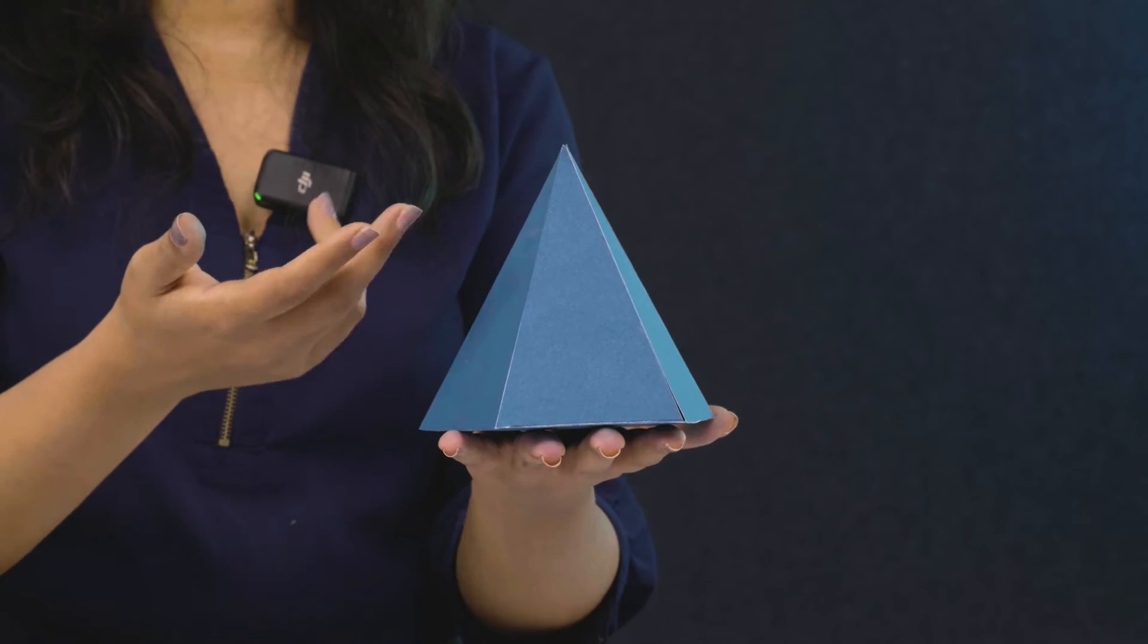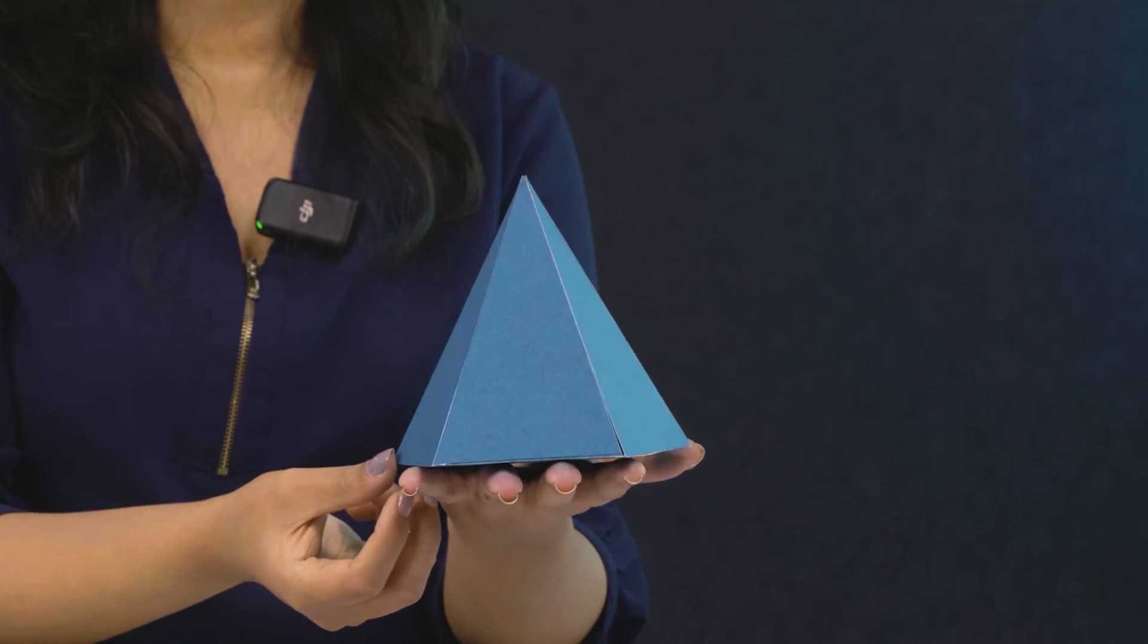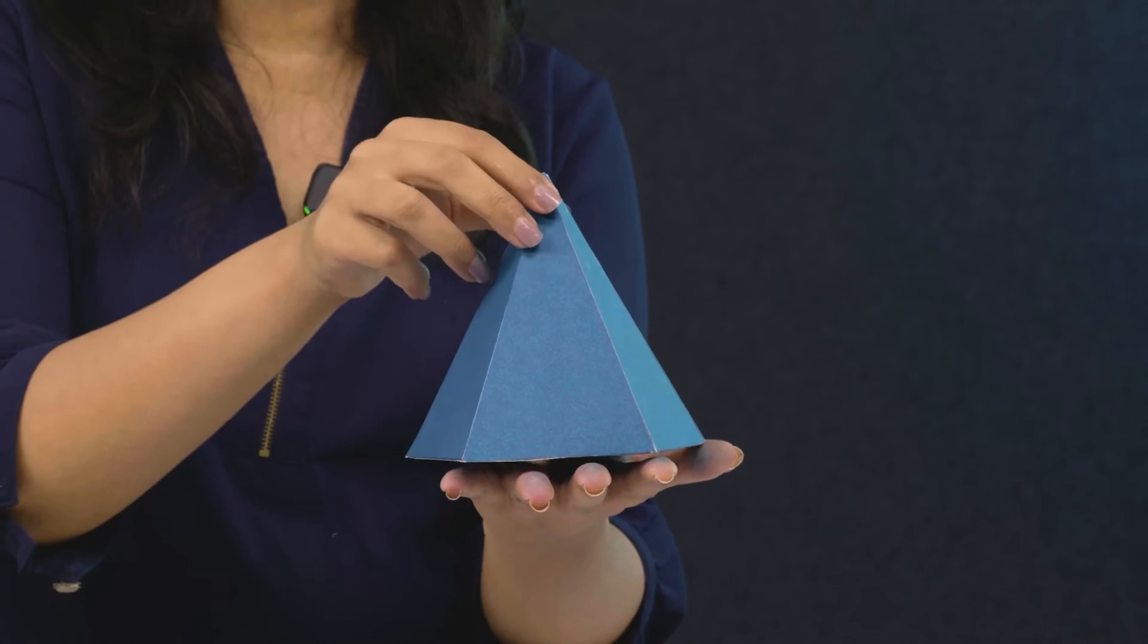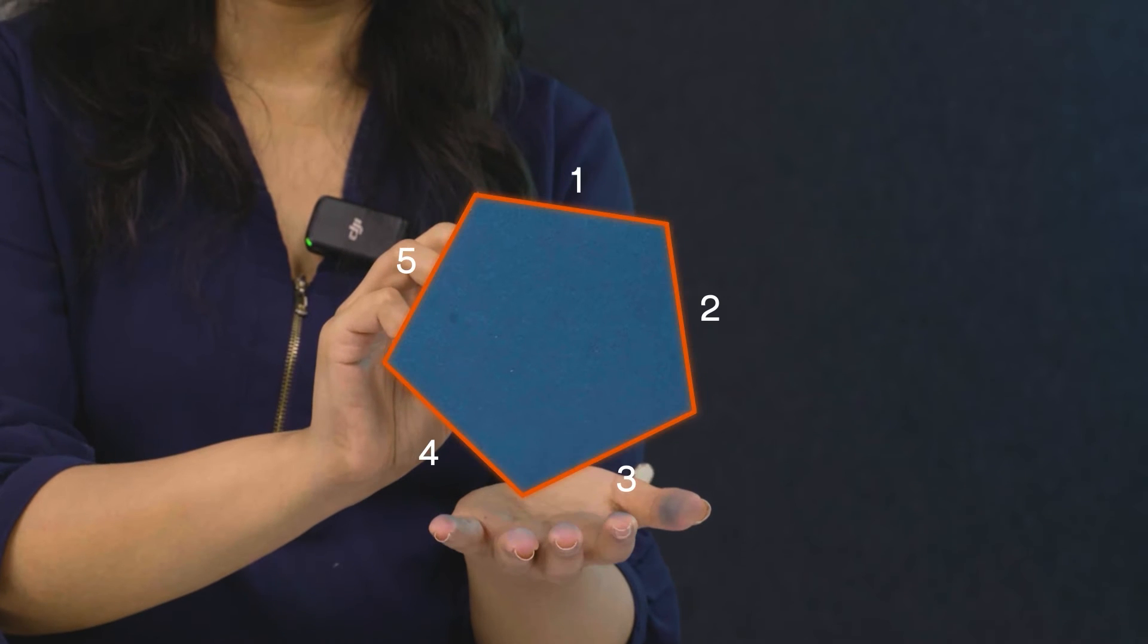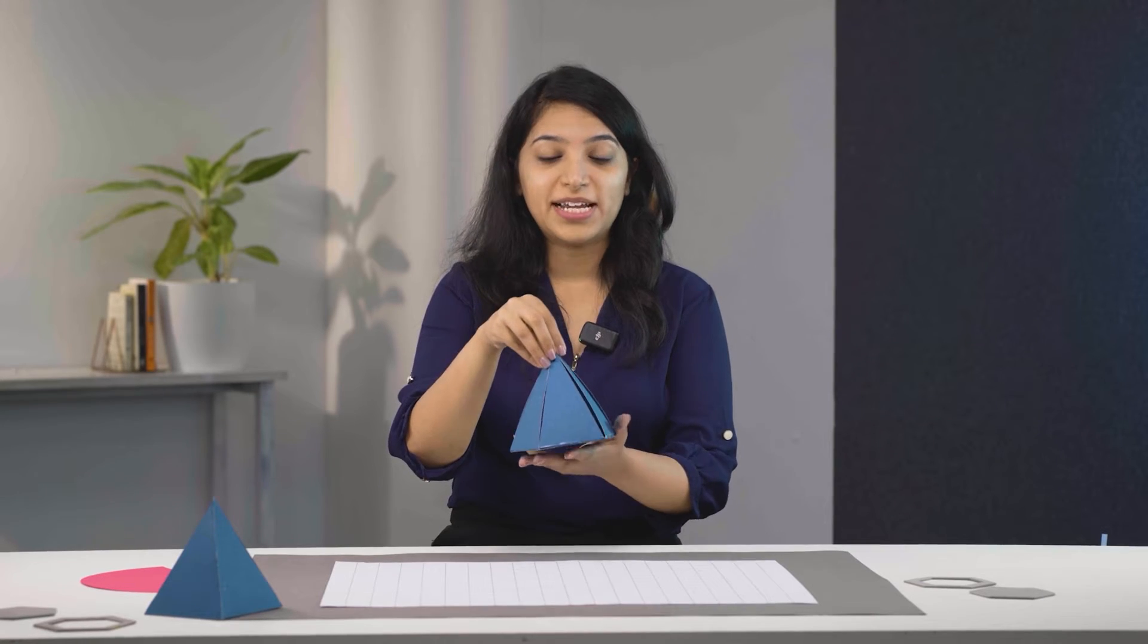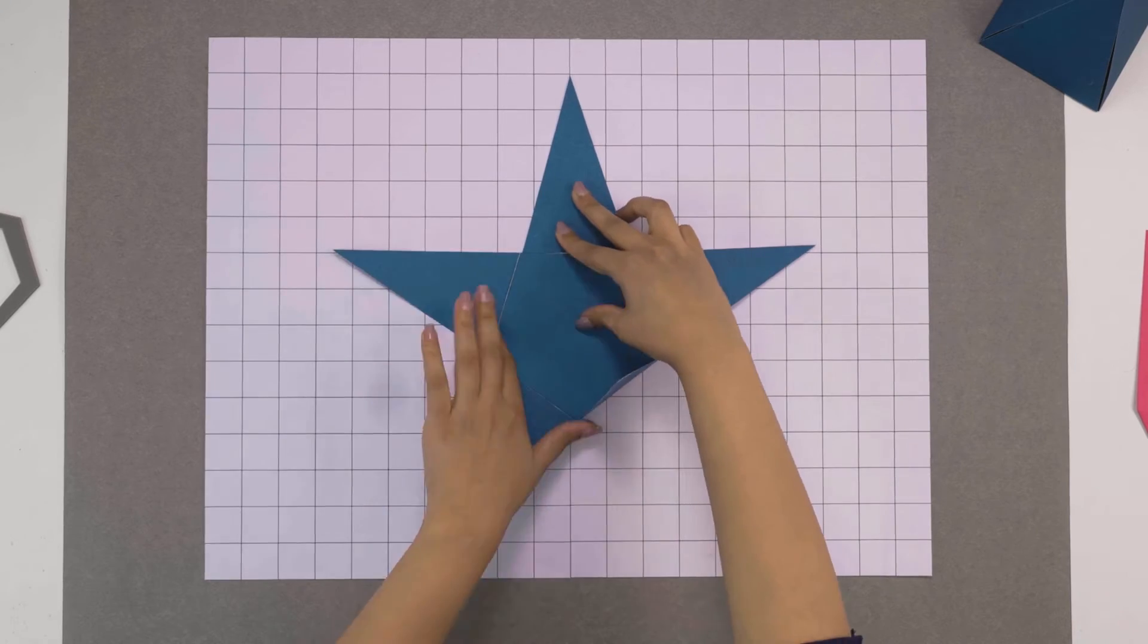The lateral surface of any pyramid is made up of triangles, as many as the number of sides of its base. Like this pentagonal pyramid has 5 equal triangles.